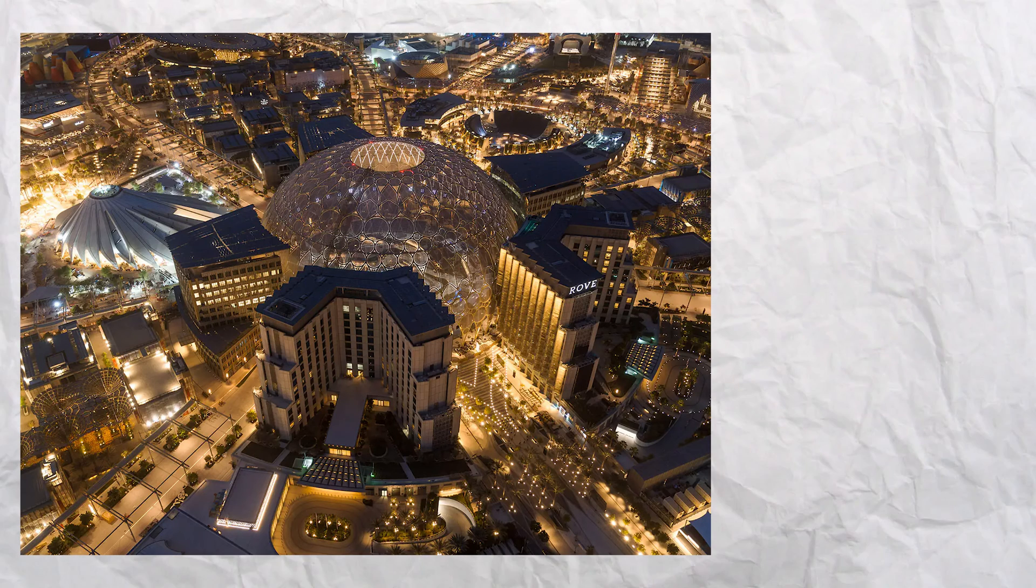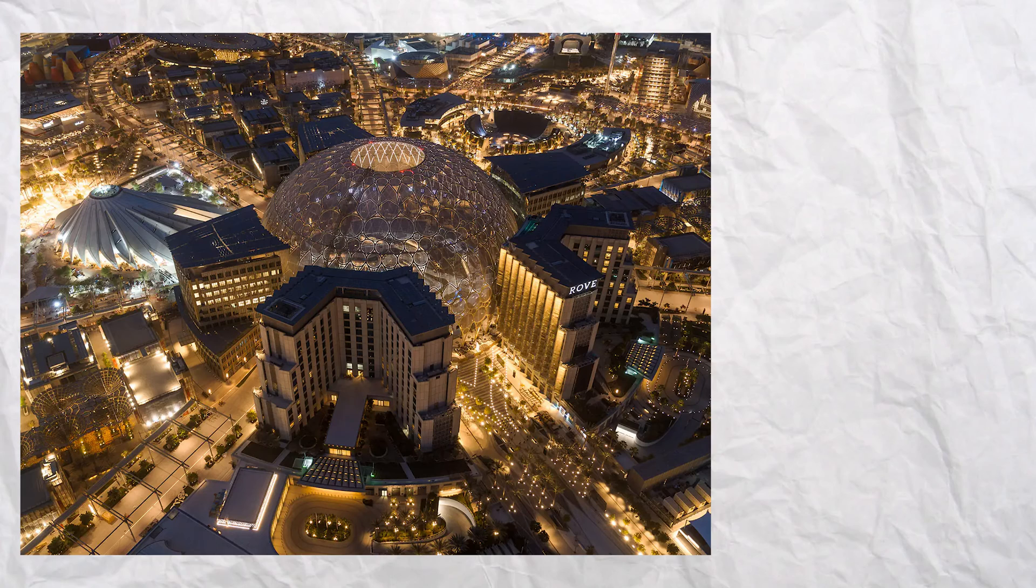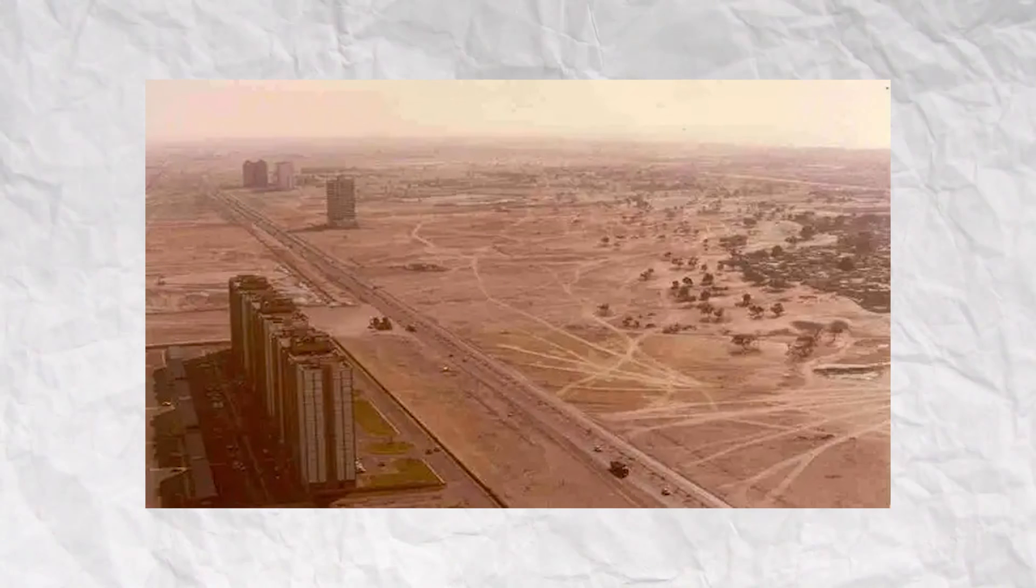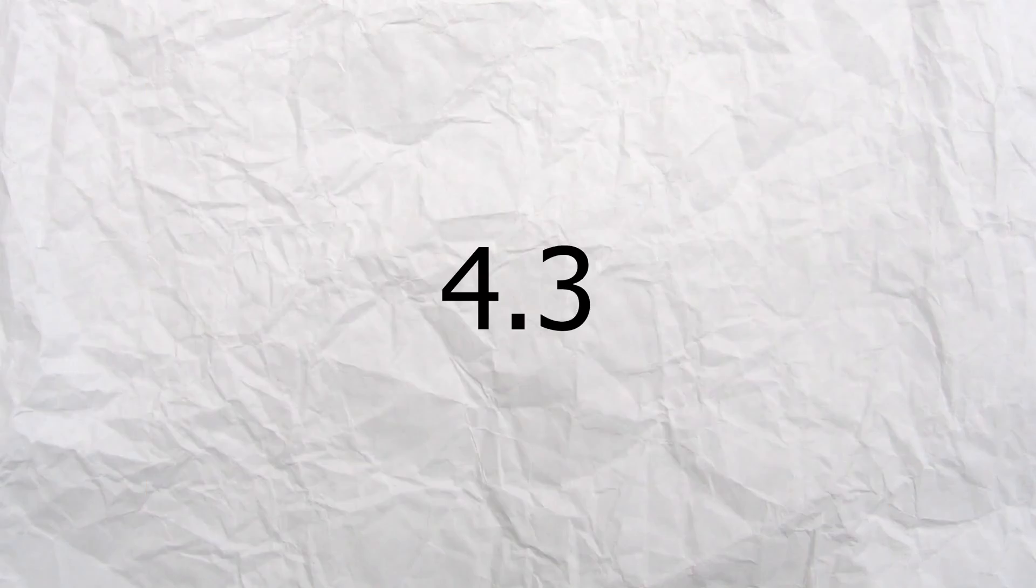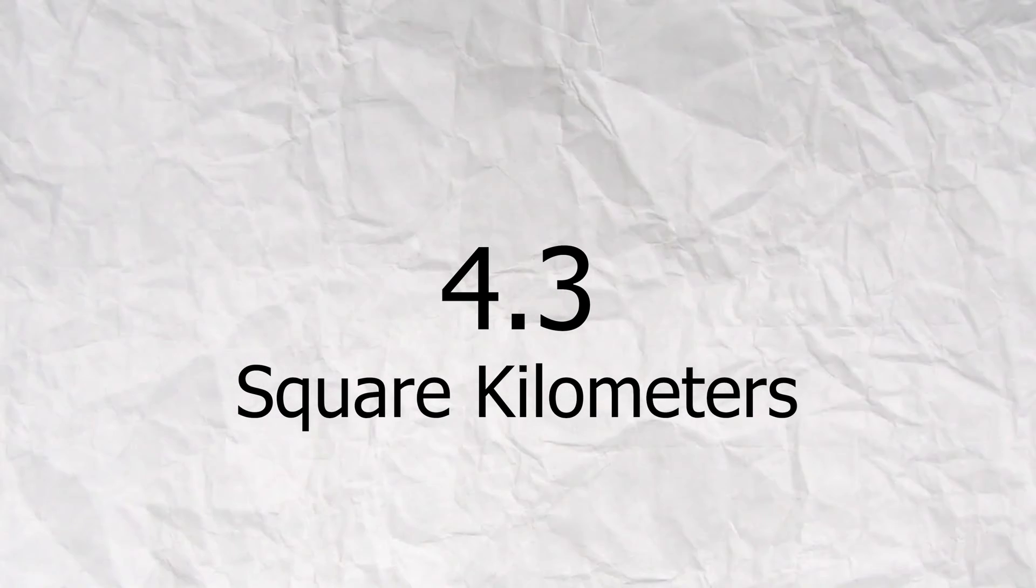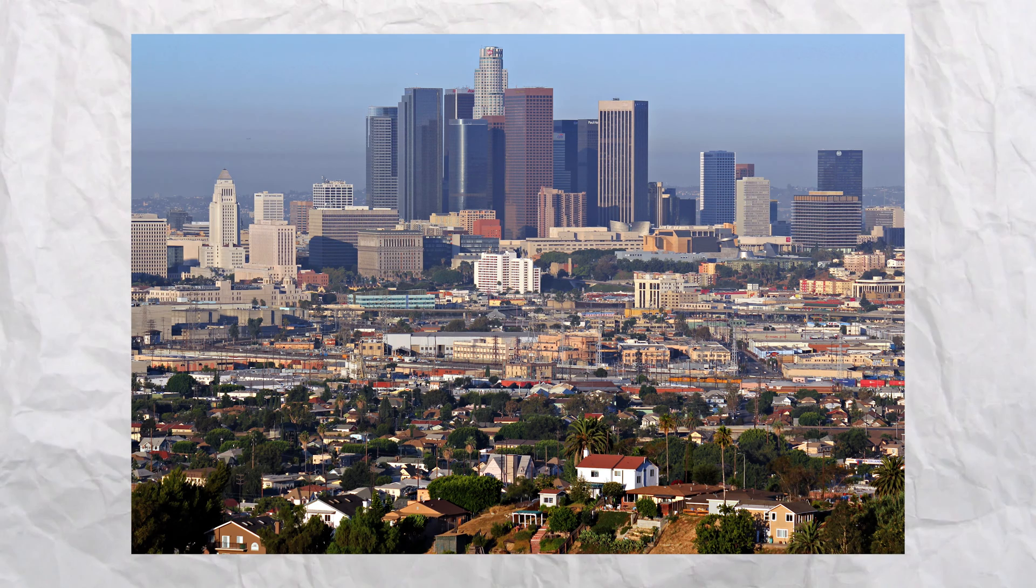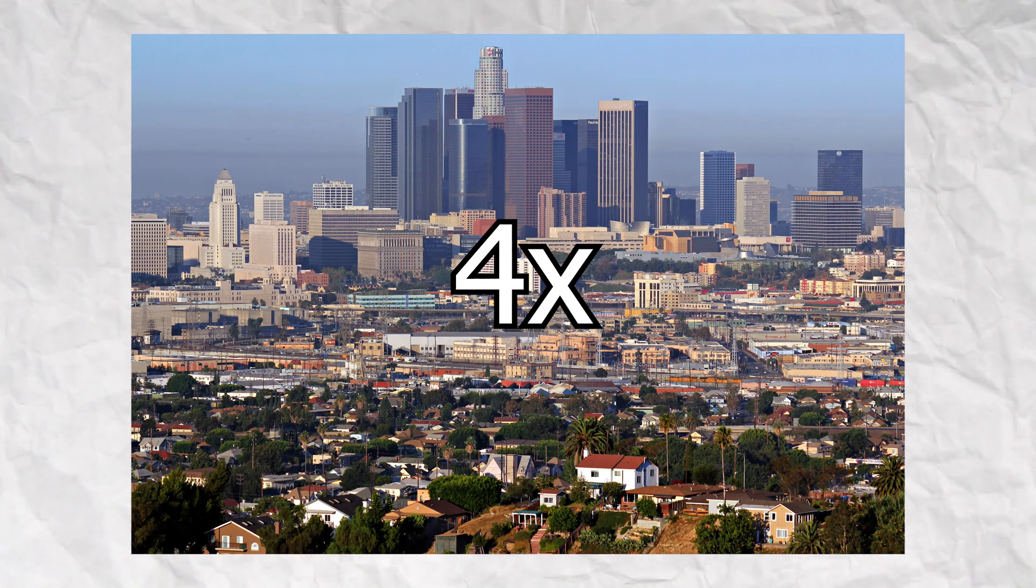But this was a pretty easy city to build. Expo was built on very flat land, and it wasn't very big. The city was just the size of 4.3 square kilometers. To put that into perspective, downtown LA is just slightly under four times that size, being 15.1 square kilometers.